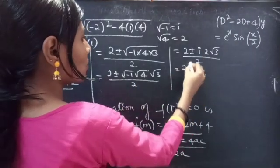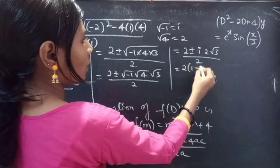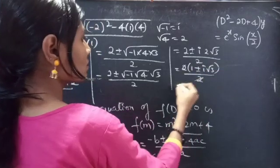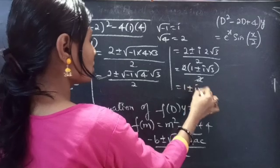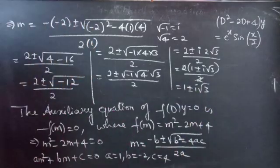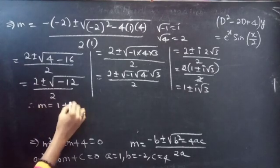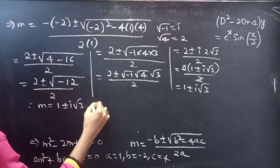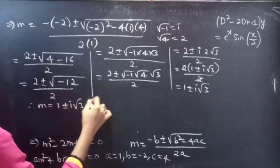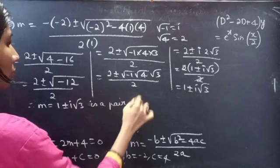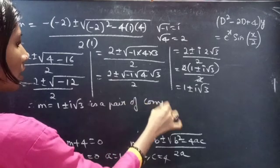Taking 2 common from the numerator: m = (2(1 ± i√3)) / 2, the 2 cancels, giving m = 1 ± i√3. This is a pair of complex conjugate roots.